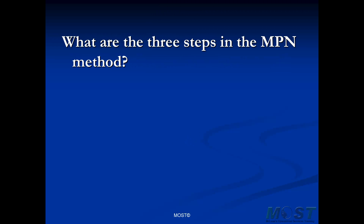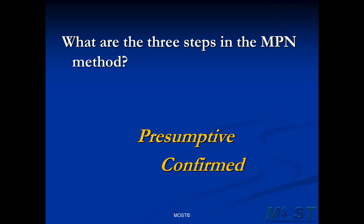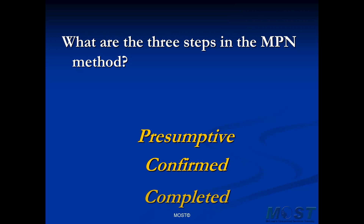What are the three steps in the MPN method? That is the most probable number method, also known as the multiple tube fermentation method. The three steps are the presumptive test, the confirmed test, and the completed test, and these are done in sequence.